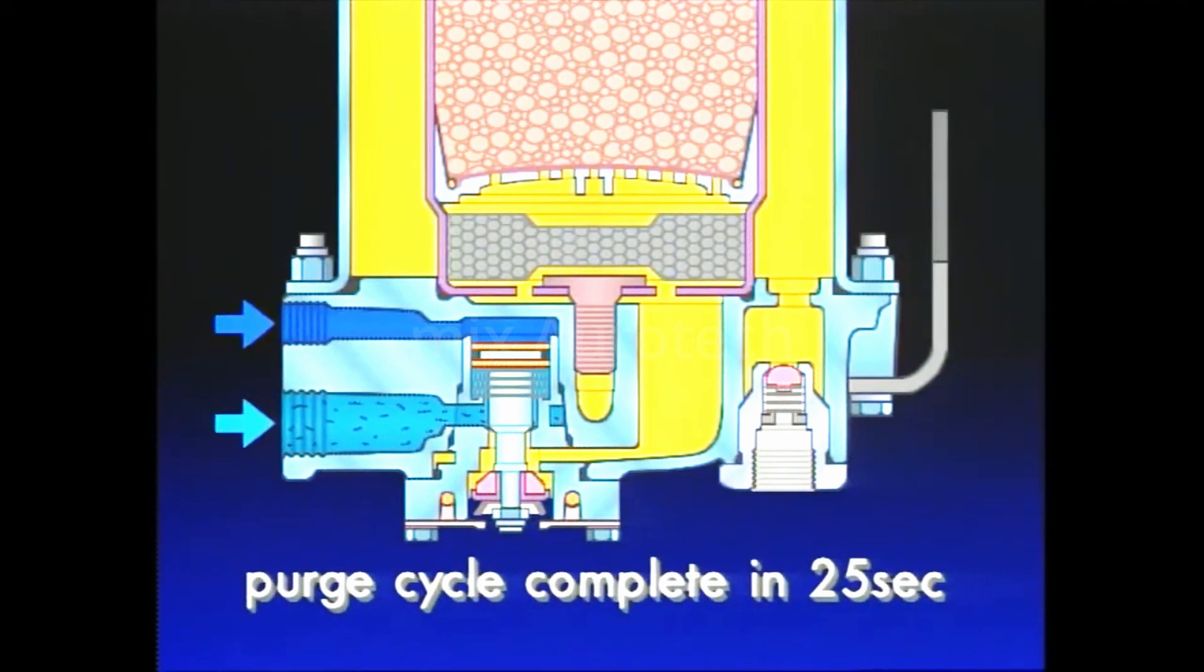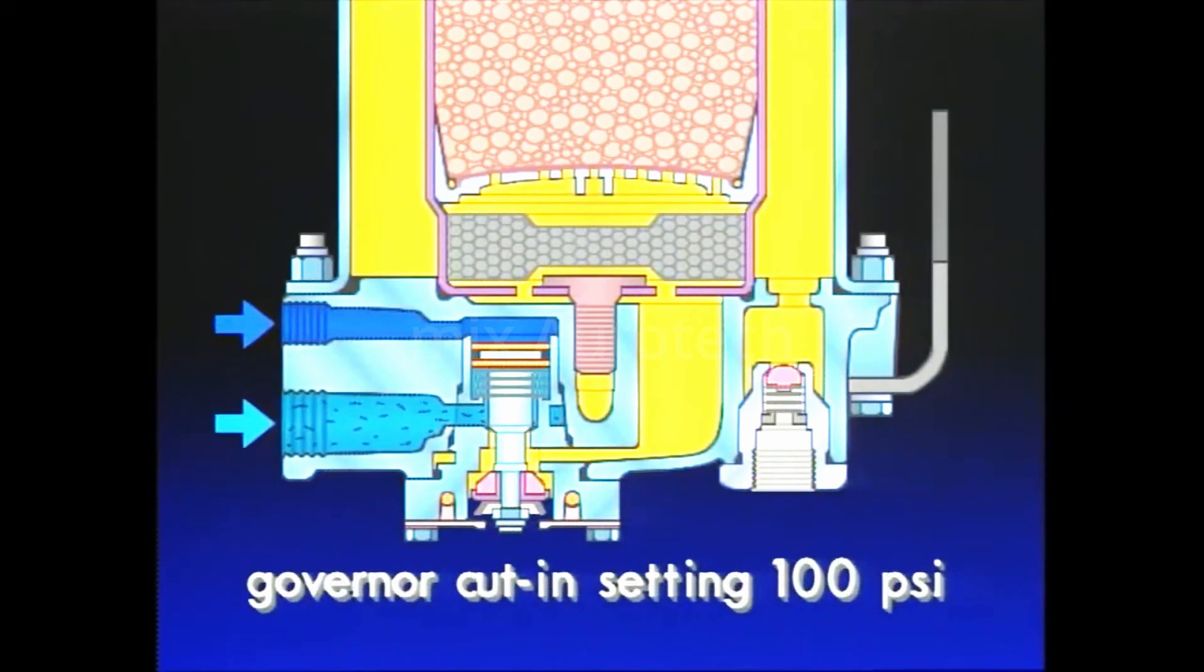The purge valve will remain open until air brake system pressure is reduced to the governor cut-in setting of 100 psi.